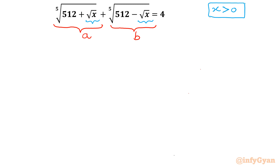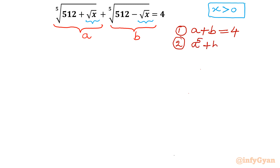Equation number 1: a plus b equals 4. Now for equation 2, because a is the 5th root, I can write a to the power 5 plus b to the power 5 equals 512 plus square root x plus 512 minus square root x, which becomes 1024. So these two equations are confirmed.